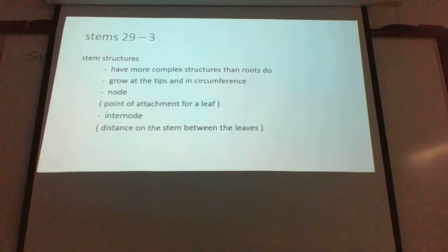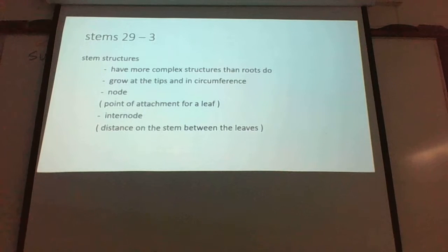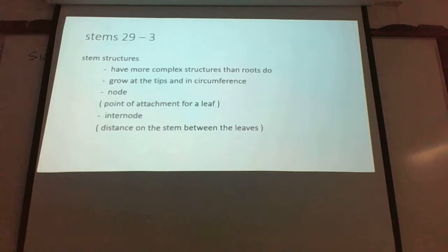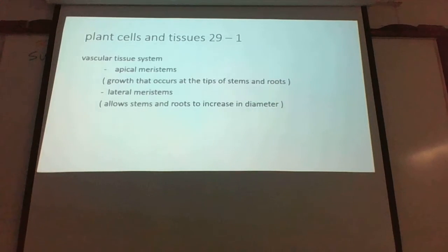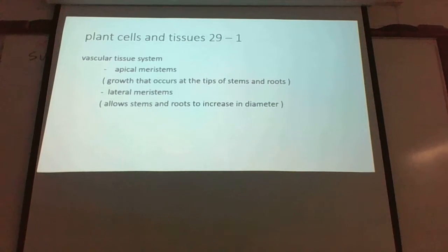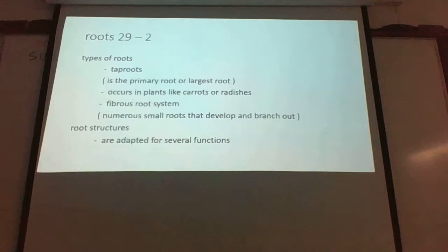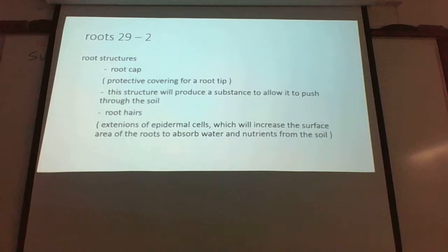The big concepts to take home: the three types of supportive cells, the three main parts of plants — roots, stems, and leaves — and their assorted functions. Know what you find within those structures, especially the lateral meristem growing out from the middle, the apical meristem growing at the tips of stems and roots, the root cap pushing through the soil, and root hairs helping grab more water to increase surface area for photosynthesis.